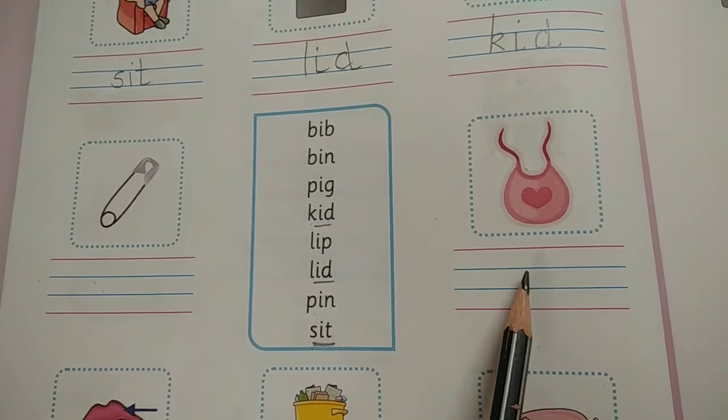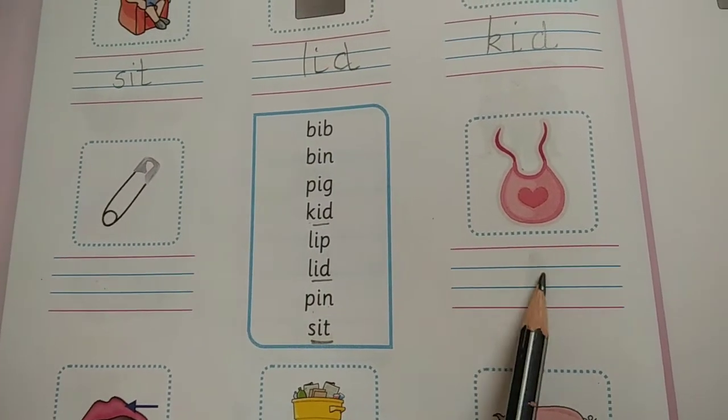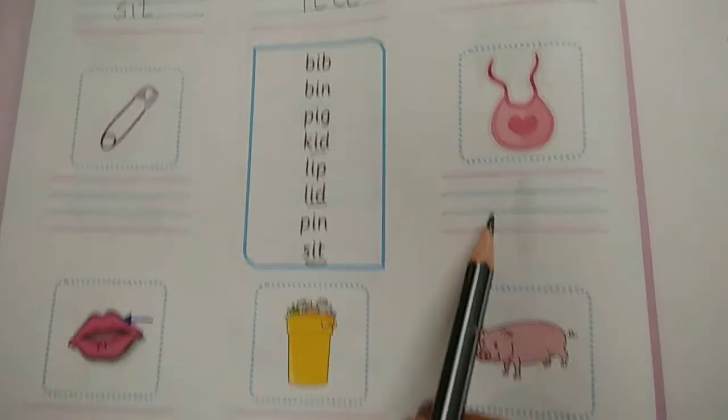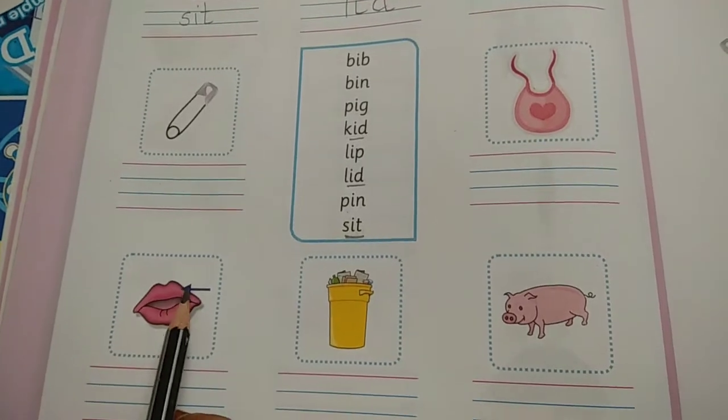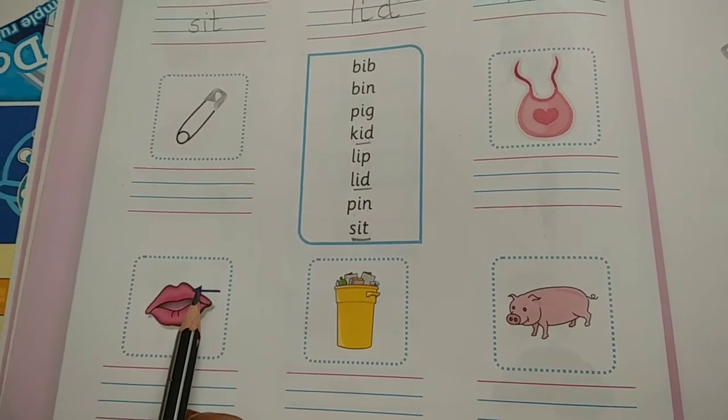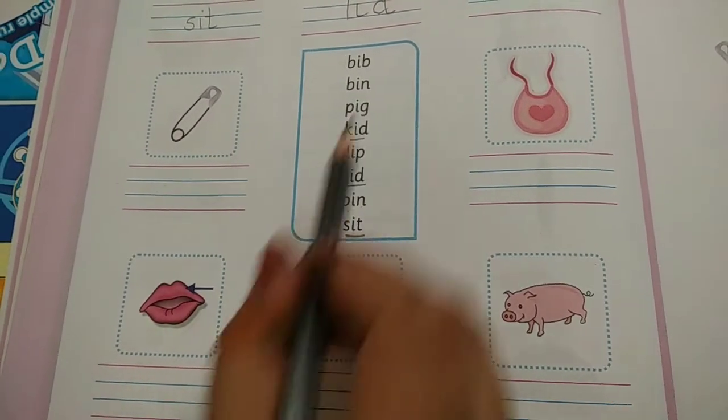This is bib. B-I-B. B-I-B. Bib. Here is the word bib. So you will write it here. Now this is an arrow. That means they are just asking us lip. It is just lip. L-I-P. L-I-P. Here it is. You will write it over here.